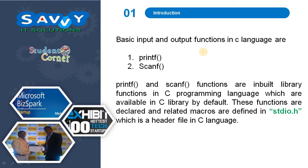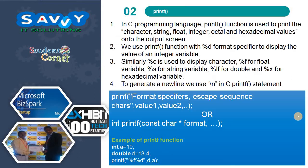The basic input output functions in C language are printf and scanf. Printf and scanf functions are inbuilt library functions in C programming language which are available in the C library by default. These functions are declared and related macros are defined in the standard input output header file in C.